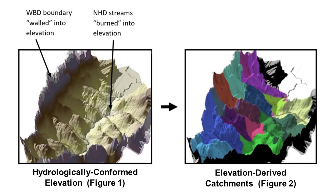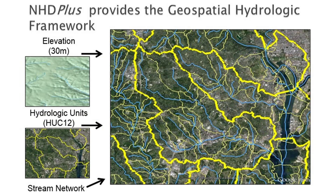Much of this processing will not be necessary when all three datasets are derived from 3DEP. The resulting hydrologically conformed elevation data, shown in Figure 1 on the left side, is then used to delineate catchments — local drainage areas that conform to the streams and hydrologic units, shown in Figure 2 on the right side. The catchments, shown with yellow boundaries on the map, tie the landscape to the stream network, shown in blue, forming a surface water geofabric for organizing and analyzing water resource information.